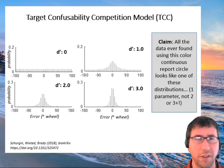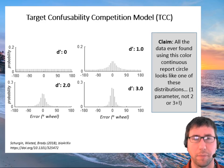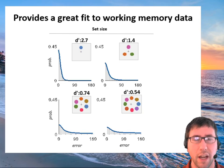And our claim is basically just that all the data ever found using any continuous report task in this color circle looks just like this. There's only one parameter, just memory strength varies. There's not two parameters, there's not a mixture model, there's not three parameters, there's not variable precision. It just all looks like this. And that actually provides a really strong fit to data.